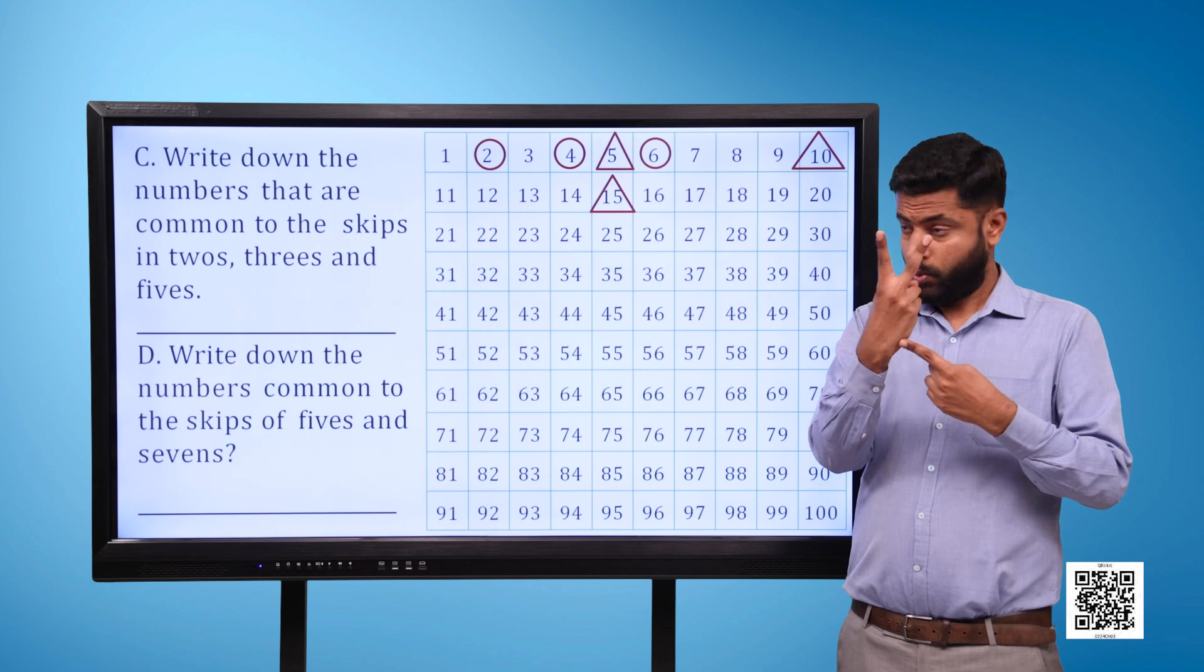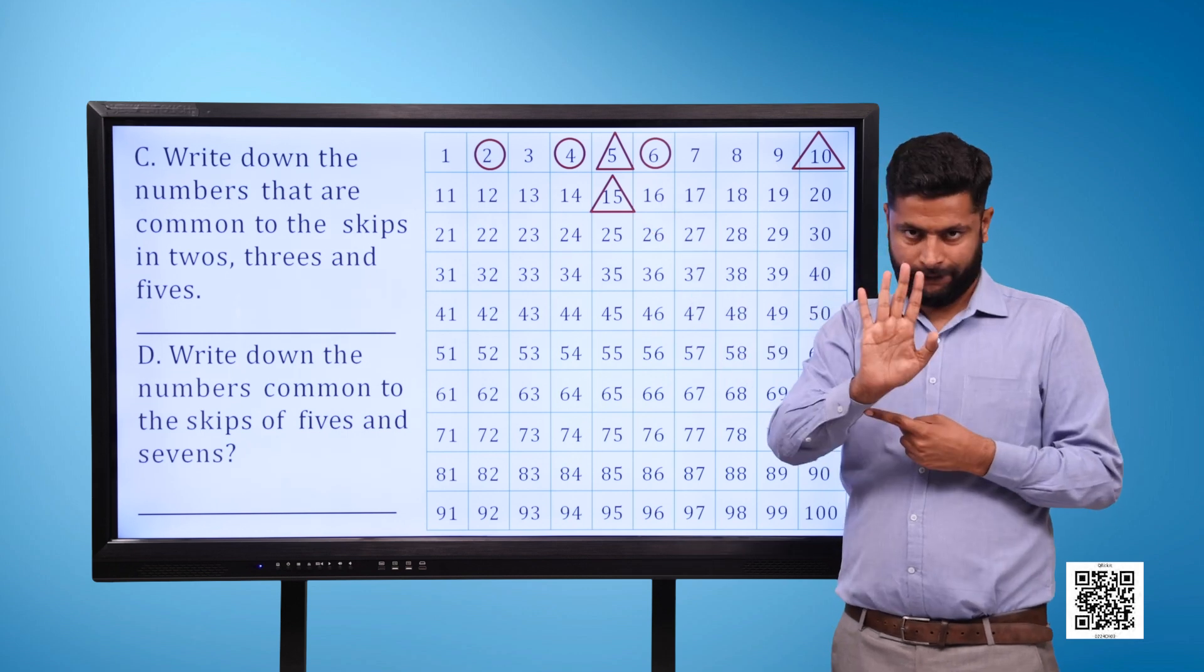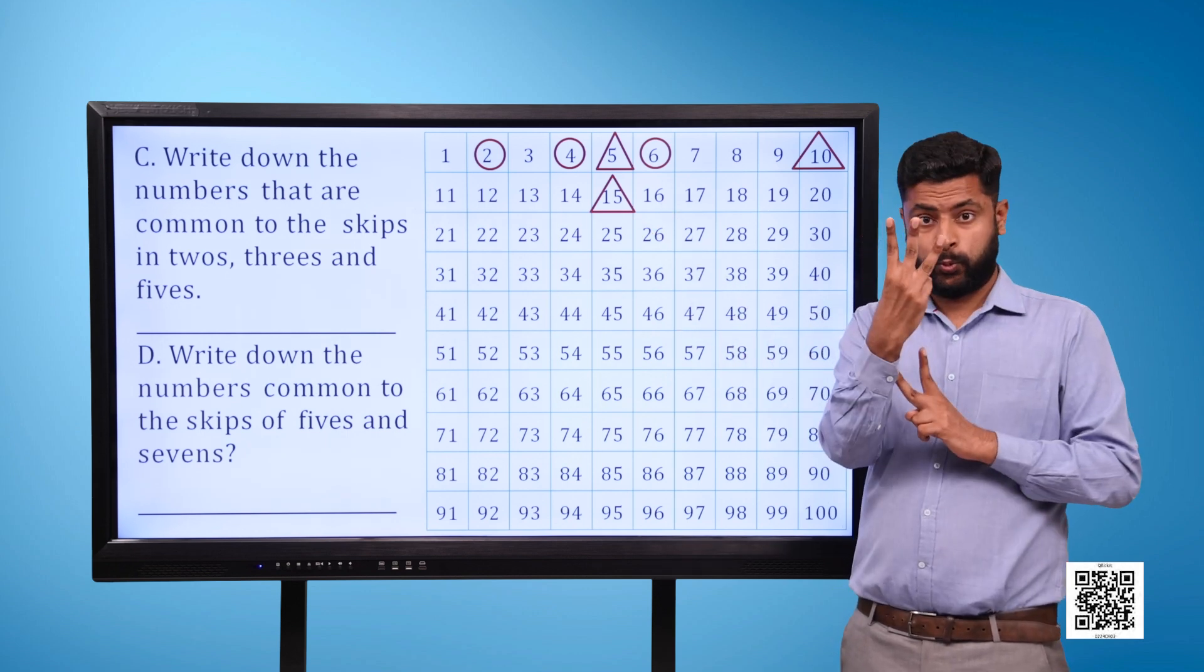Write down the numbers that are common to the skips in 2s, 3s and 5s.